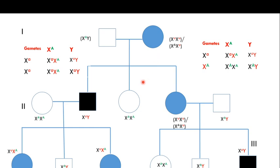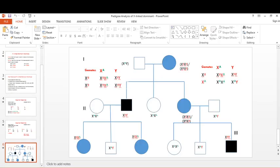This is how X-linked dominant genetic disease pedigrees look. As I told you, there is no skipping of generations — there are affected individuals in generation one, generation two, and generation three. If you like the video, please subscribe to my channel, hit the like button, and share it with your friends. In the next video I'll be focusing on X-linked recessive inheritance patterns and pedigree analysis.